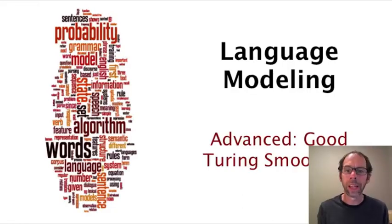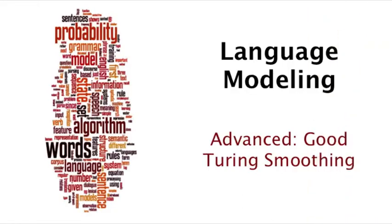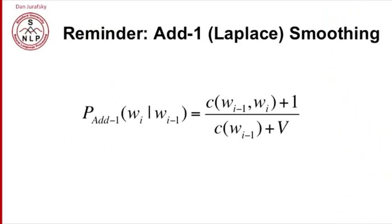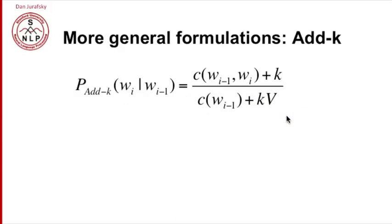We're ready to talk about advanced methods of smoothing. Remember the add-1 smoothing we had earlier: we add 1 to the numerator and V to the denominator. We also saw a generalization of that, add-k smoothing, where we added k to the numerator and kV to the denominator.